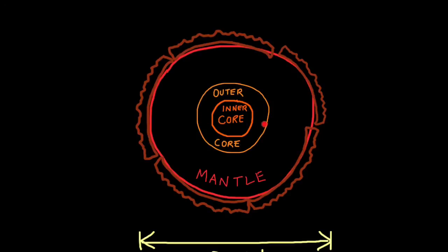The inner core and outer core are made from iron and nickel — two magnetic metals — which is why our Earth has a magnetic field around it. Most of the Earth's structure is composed of the mantle, which acts like a very slowly moving solid. The heat from the mantle is generated through the process of radioactive decay, as unstable elements decompose under the Earth's crust. The thin outer layer is known as the crust — this is where we live.